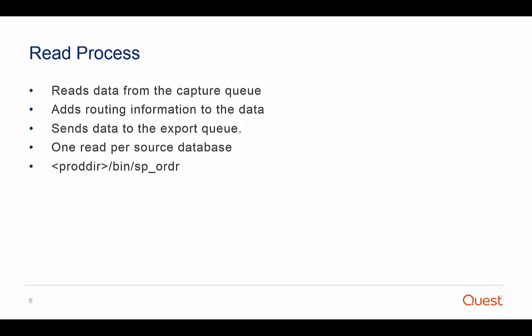The read process operates on the source system to read data from the capture queue and add routing information to the data, then, after processing the data, sends it to the export queue. There is a separate read process for each data source, each functioning concurrently and independently. By default, all read processes on the system share the same export queue. However, you may specify to create multiple export queues, in which case the read process will write to multiple export queues. The read process is named SPORDR and resides with the other SharePlex processes in the bin sub-directory of the SharePlex product directory.